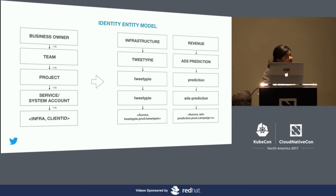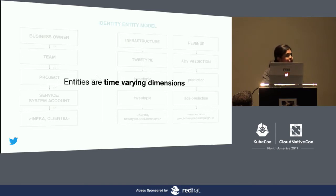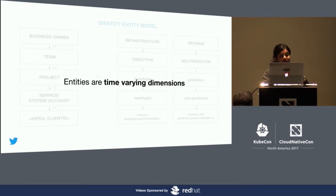The same model can support all the infrastructures, be it Hadoop, Manhattan, or any other platform infra service. By default, every entity is a time-varying dimension. Thus, if a team were to re-org tomorrow, or if a project is moved from team A to team B, the entity model supports each of these changes. This means at any point in time, as long as we have this data, we can say which team owned this project and what was the cost incurred by that team on a specific day.